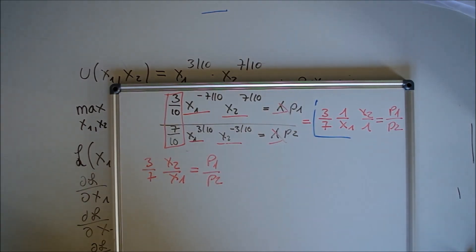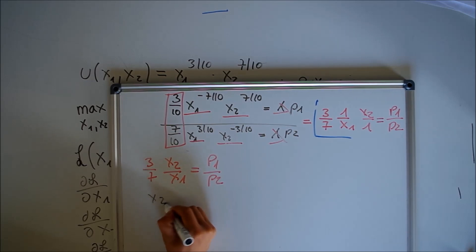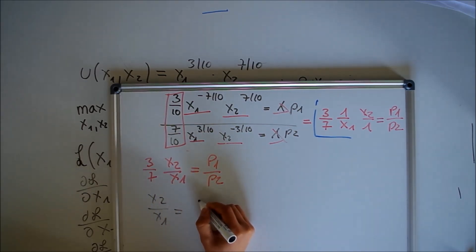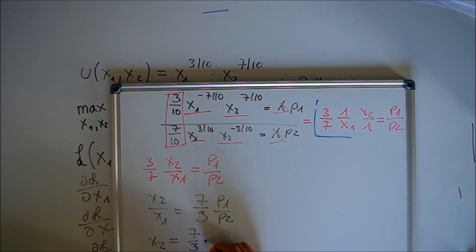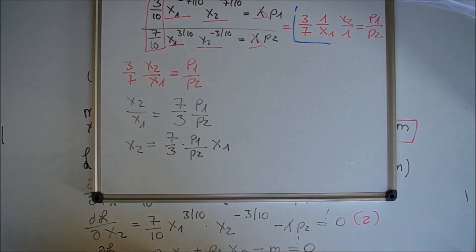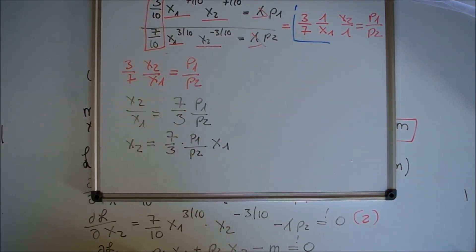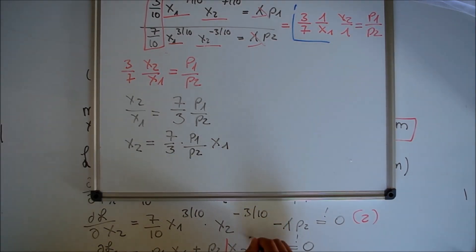Now solving for x2, we have x2 = (7/3)*(p1/p2)*x1. You now plug this term for x2 into the budget constraint, or more precisely, into the partial derivation with respect to lambda.